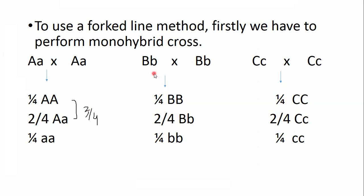Similarly, for the second gene pair B, both parents are present in heterozygous condition, giving the same genotype ratio of 1:2:1 in F2 offspring. The phenotype ratio is the same: three out of four offspring represent the dominant B phenotype while one out of four represent the recessive B phenotype. Similar results are obtained with the third gene pair C.